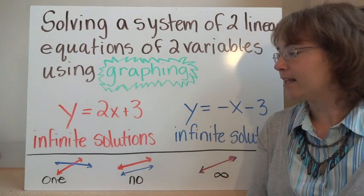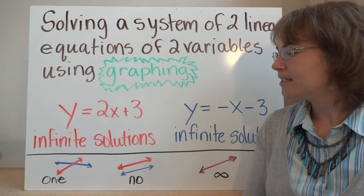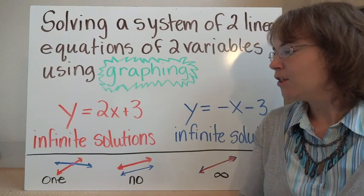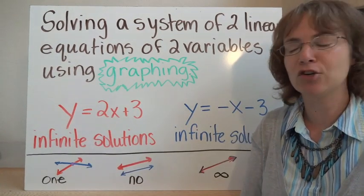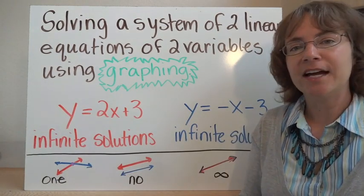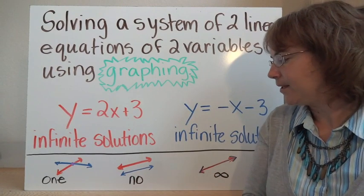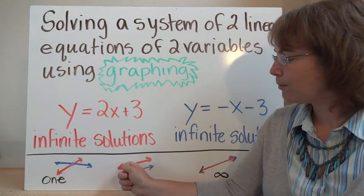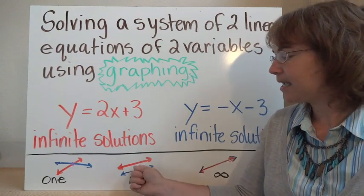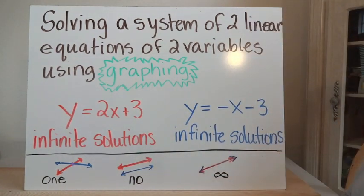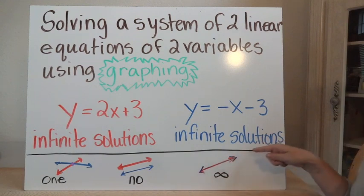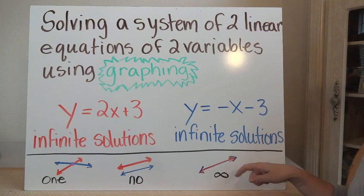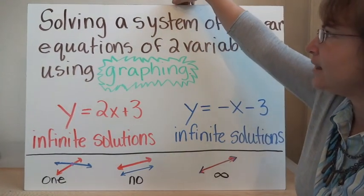There are three different possibilities when we have two lines. The first is it has one solution — the lines cross and there is one coordinate point that works for both of them. We also have the possibility of no solutions — the lines are parallel and will never touch each other. The other option is the lines are multiples of each other, meaning they're actually the same line, giving infinitely many solutions.